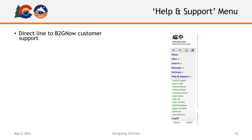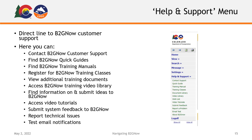Your Help and Support menu is your direct line to B2GNOW customer support. Here, you can contact B2GNOW customer support, find B2GNOW program quick guides, find B2GNOW training manuals, find and register for B2GNOW training classes, view additional training documents, access the B2GNOW training video library, find information and submit system ideas to improve B2GNOW, access B2GNOW video tutorials, submit feedback about your experience with the system, report any technical issues, and test that you are receiving email notifications from B2GNOW to the right email account.